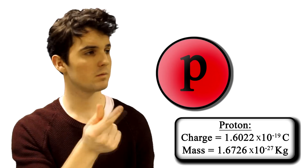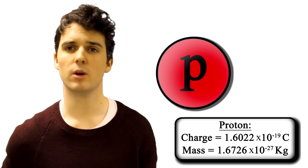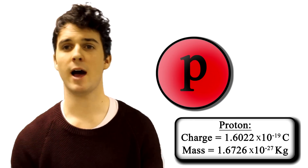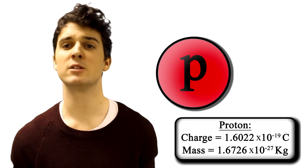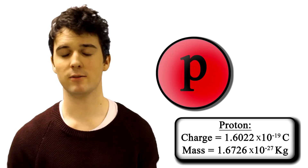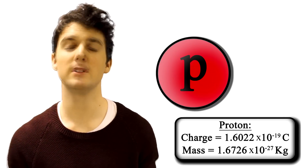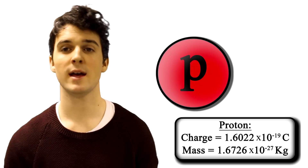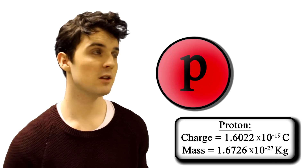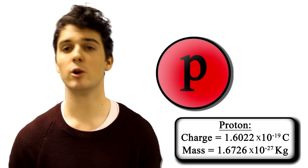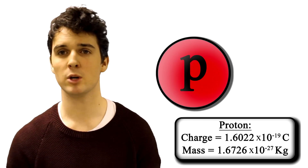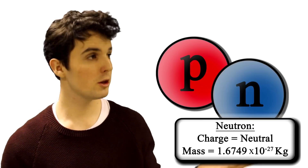The atom has three main components. The first: the proton. The proton is quite attractive — not because it's handsome, but because it's positively charged. It lives in the nucleus and also has a neighbour called the neutron.